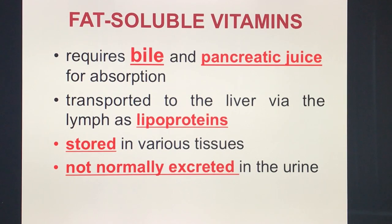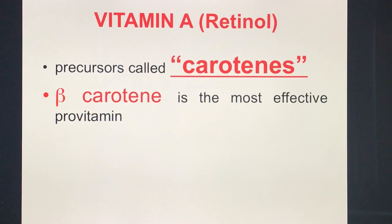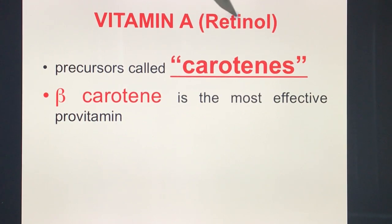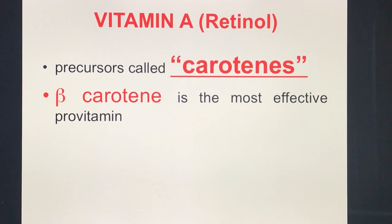Of the fat-soluble vitamins, it is usually Vitamin A that is most commonly associated with hypervitaminosis or toxicity. Starting in alphabetical order: Vitamin A — memorize retinol as its biochemical form. Vitamin A has precursors called carotenes, and beta-carotene is the most effective pro-vitamin.